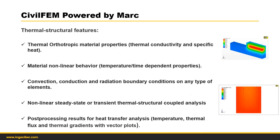The features of this type of analysis include thermal orthotropic material properties, including thermal conductivity and specific heat, non-linear behavior of new material including temperature and time-dependent properties. Of course, the boundary conditions according to convection, conduction, and radiation for any type of elements. A non-linear steady state and transient thermal-structural coupled analysis is included, and you can post-process results for this kind of heat transfer analysis.